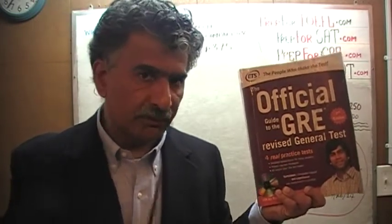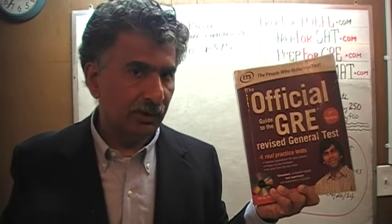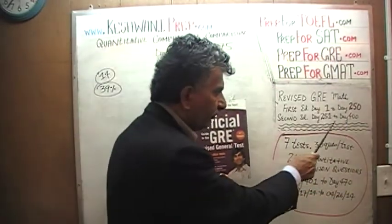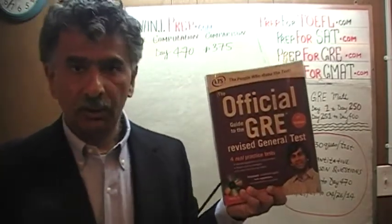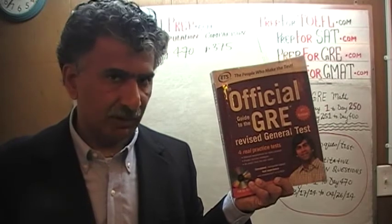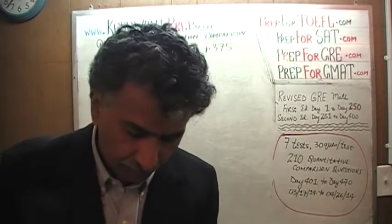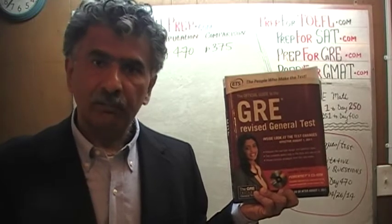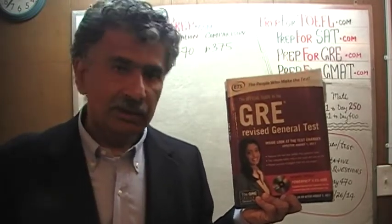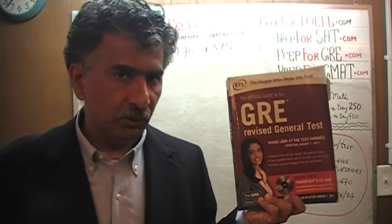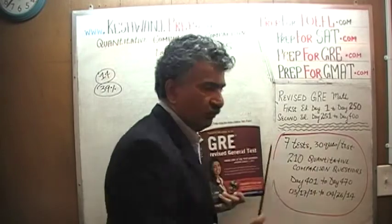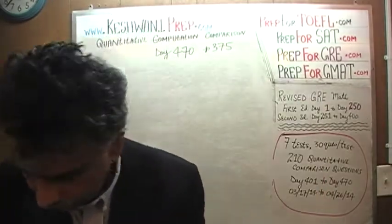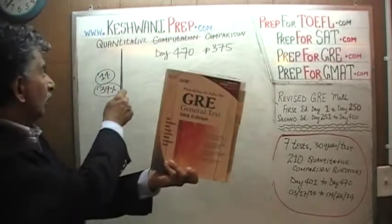We have finished solving almost all the math problems from this book. If there is any problem that gives you trouble and you wish to watch the solution, you will find solutions to almost all the problems from day number 251 through 400. This book, the second edition, contains exactly the same problems in most cases on exactly the same page numbers as the first edition. We are finished doing all the problems from this book. The original solutions, from day number 1 through 250, tend to be a little bit lengthier and more in depth.